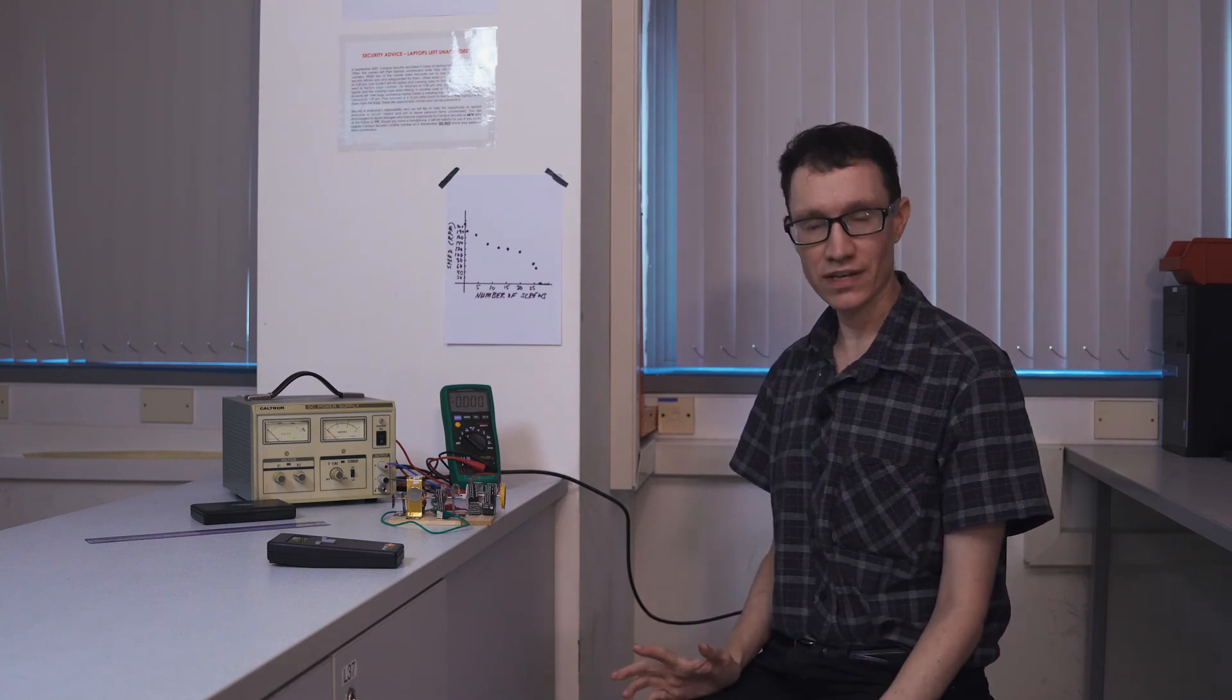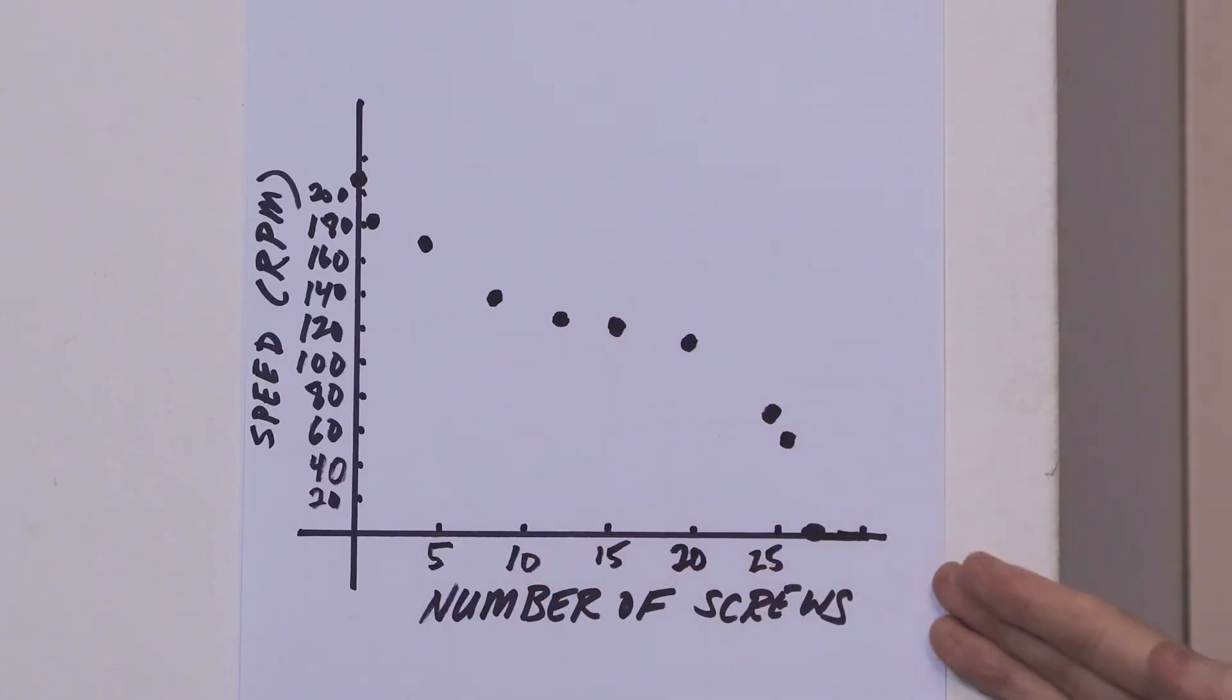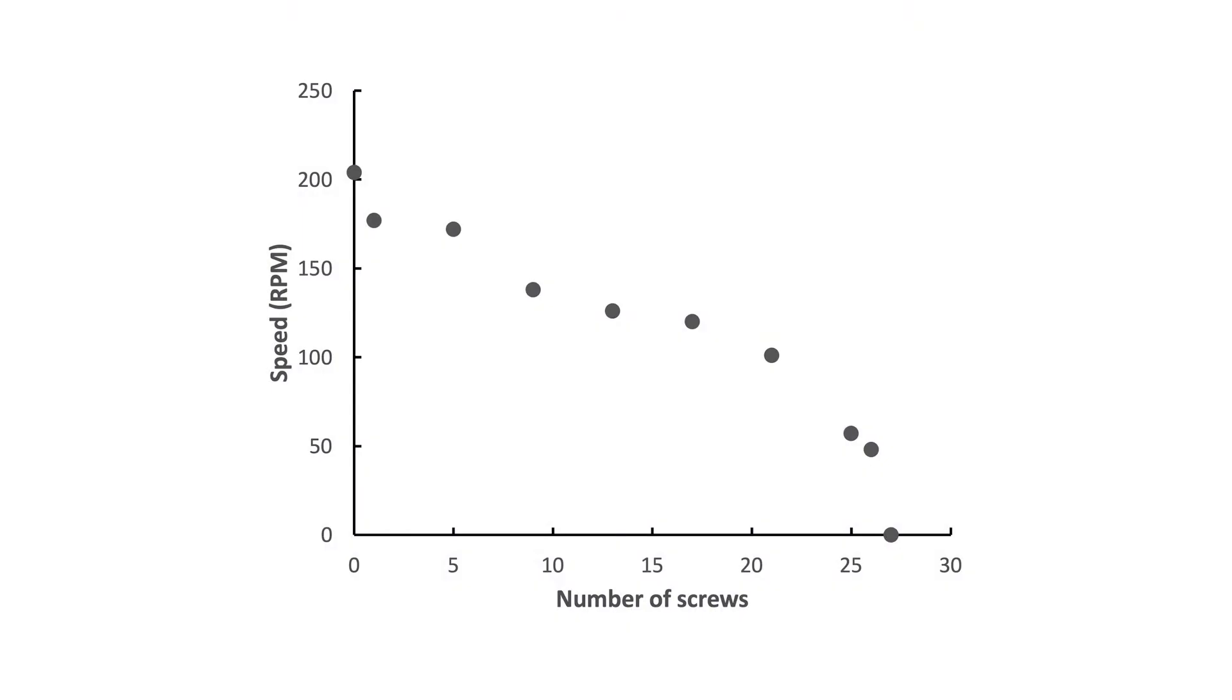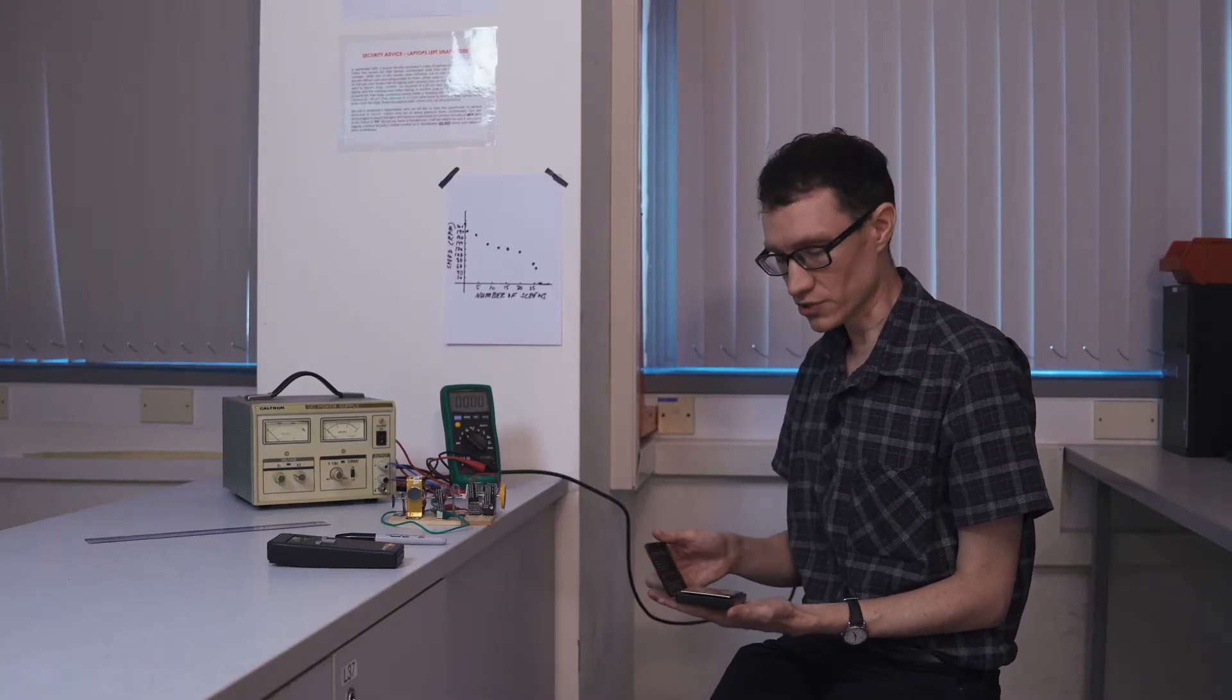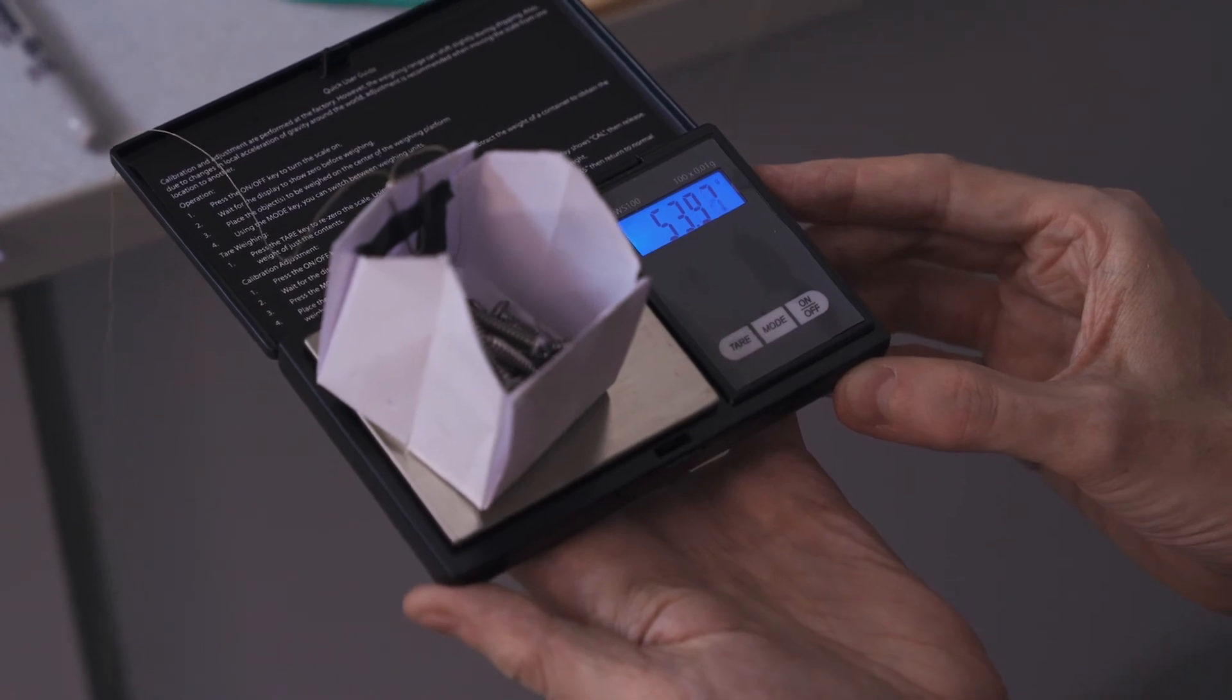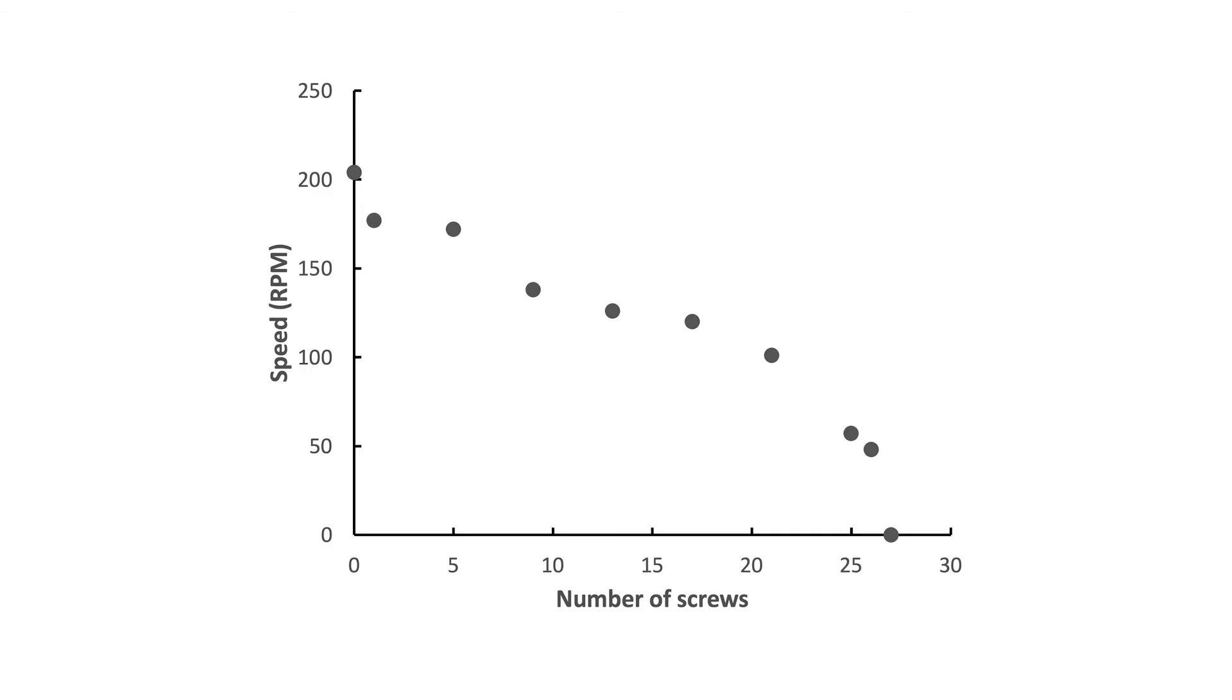What we expect with a DC brushed motor like this is a linear relationship between the speed and the number of screws in the bucket, or the weight. But what we really want is a graph of speed versus torque. In order to get the torque, we're first going to have to convert the number of screws into mass. I have a scale right here. Let's weigh the bucket of screws using this scale. It looks like the bucket weighs about 54 grams, and that corresponds to 27 screws. This is enough information for us to change the x-axis of our plot into mass.